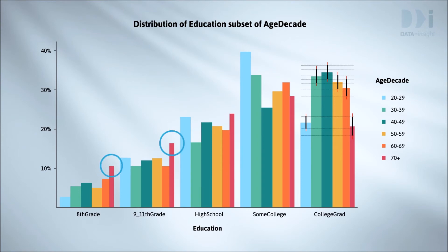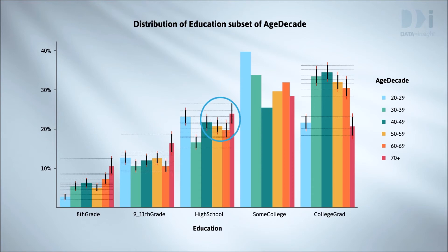The high percentage with 8th grade or 9 to 11th grade education compared with all the other age groups — that's also still clearly supported. The high percentage with high school compared with close age groups: there's an overlap between the intervals there so we can't really draw that conclusion.